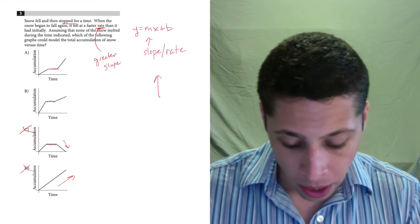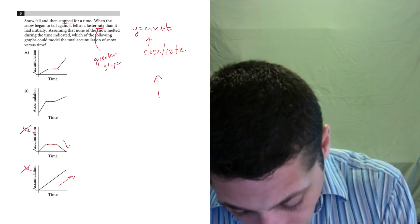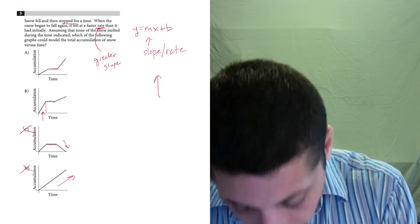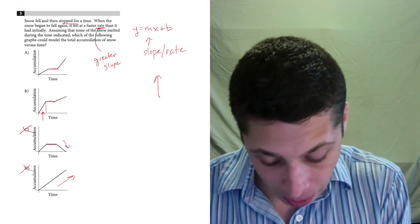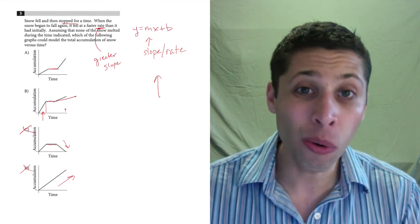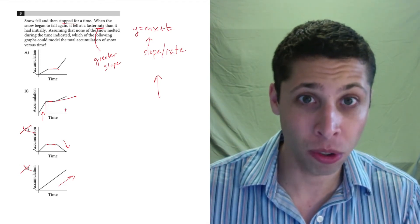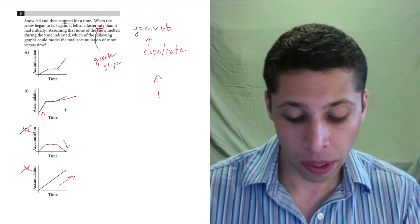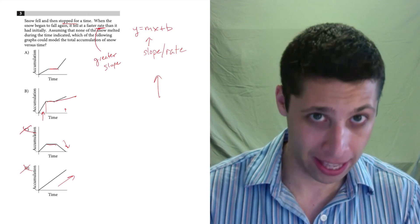Now as for the other two, this slope on choice B is greater at the beginning and more flat at the end. So it has a lower increase, a lower rate at the end of the story, which is not what we want. We want to have the greater slope at the end.